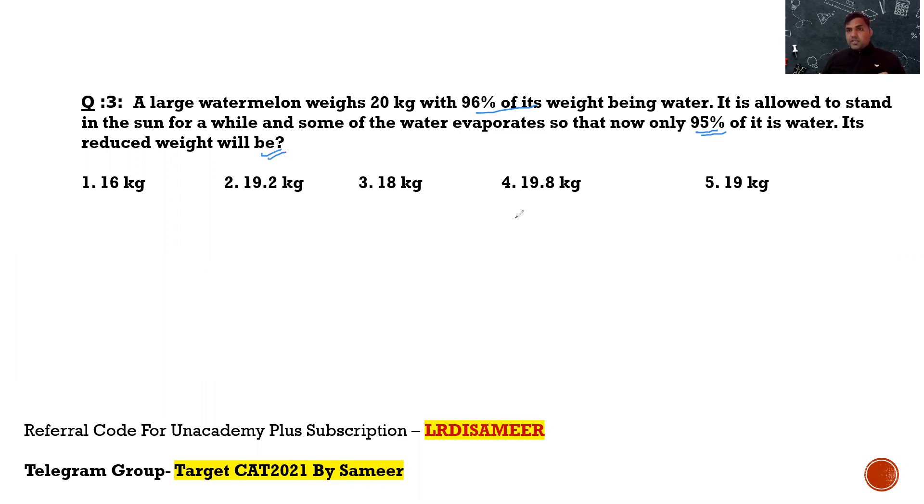In all these type of questions, there's one best method to solve the question: just look at that part which is not getting changed, the part which is constant. You see that the weight of watermelon is getting reduced because of the evaporation of the water, and in a watermelon you have 96 percent water. So, can I say the remaining 4 percent will be the pulp part, and this is something that you need to concentrate on because when the watermelon is placed in the sun and the water is getting evaporated, this part is not getting changed. The percentage part might get changed, but the quantity of pulp will remain same.